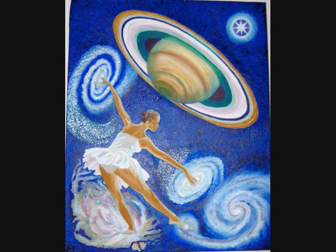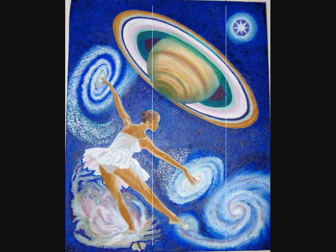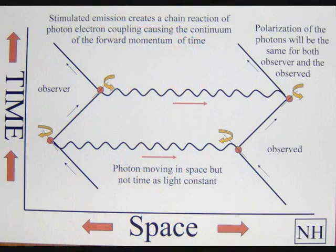In this theory, light is a constant independent of the motion of the source because time is expanding at the same rate that light moves. We have entanglement because photons move through space, but not time.